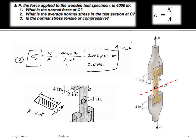So our area is just 2 times 1, which is 2 inches squared. Our N is 4,000 pounds, so our average normal stress is going to be 2,000 pounds per inches squared, and pound per inch squared is known as PSI. And if we multiply that, this is basically 2 times 10 to the third, or 2 KSI.